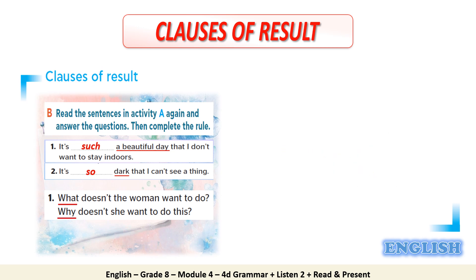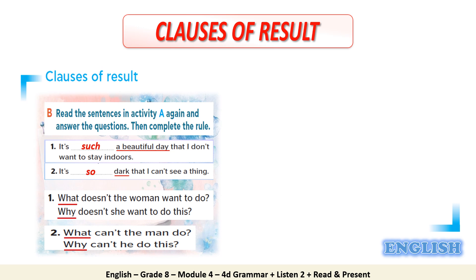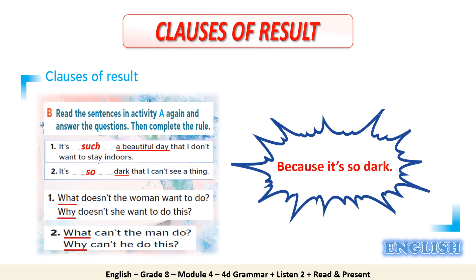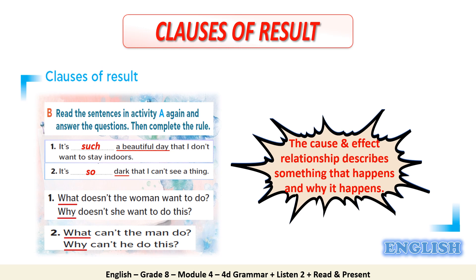Now have a look at the second sentence: It's so dark that I can't see a thing. What can't the man do? He can't see a thing. Why can't he do this? Because it's so dark. Here again, we have a cause and a result. The cause is it's so dark, and the result is the man can't see a thing. The cause and effect relationship describes something that happens and why it happens.